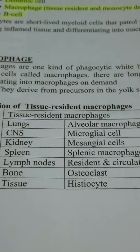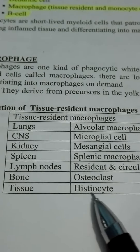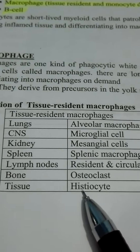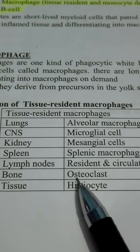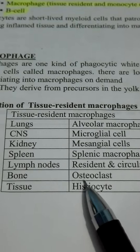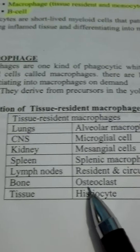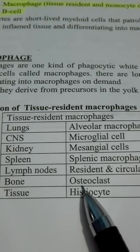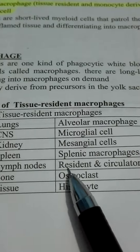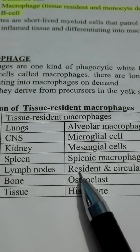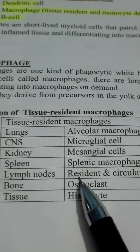In tissue, it is known as a histiocyte — when a histiocyte is born from that tissue. The osteoclast is the tissue-resident macrophage in bone. In the lymph node, it is the resident or circulatory macrophage.